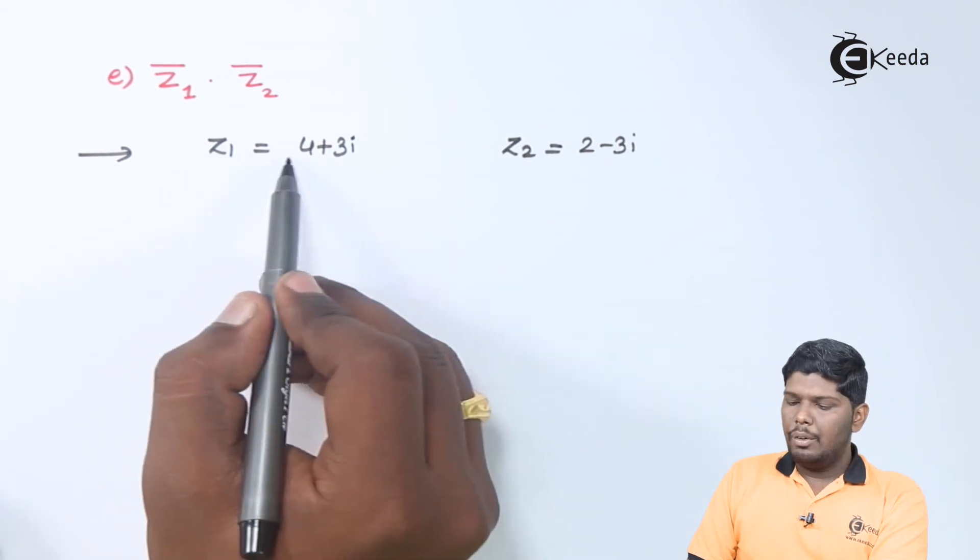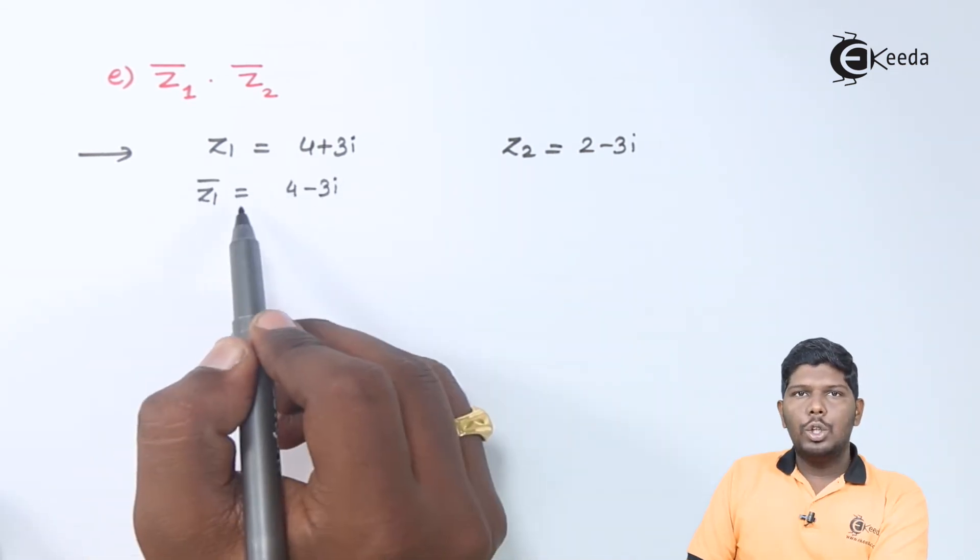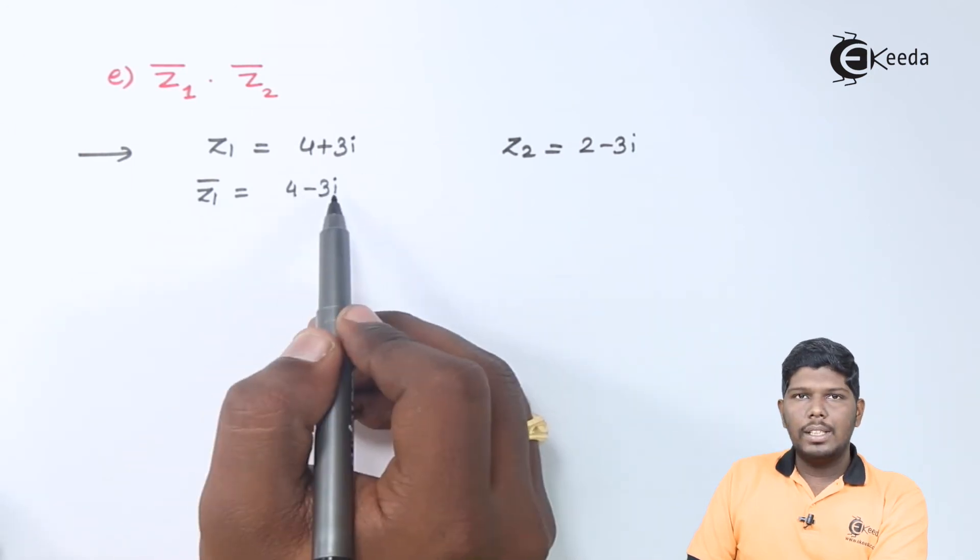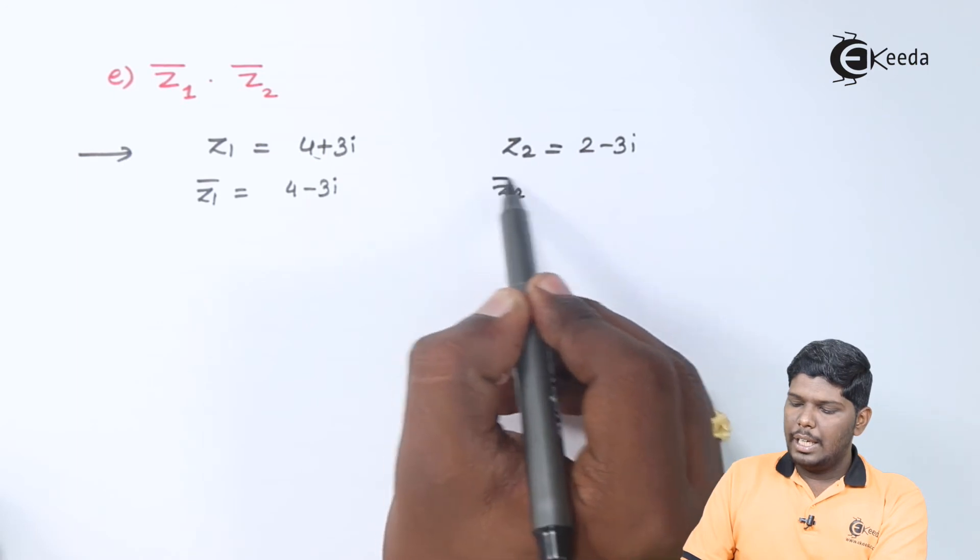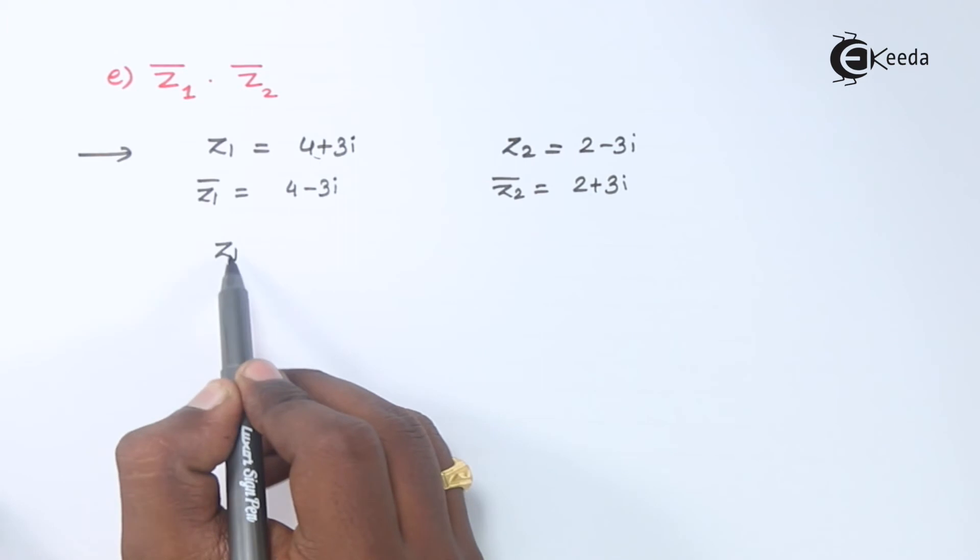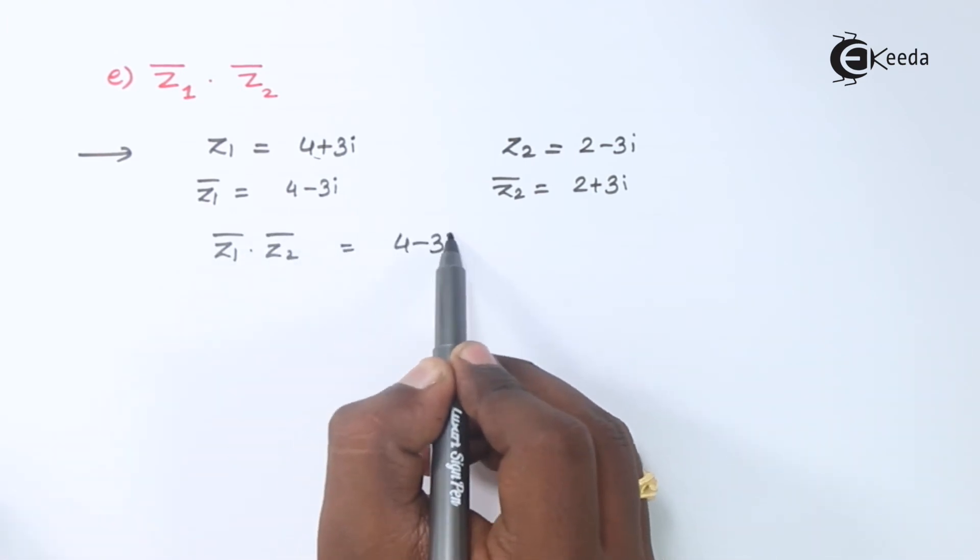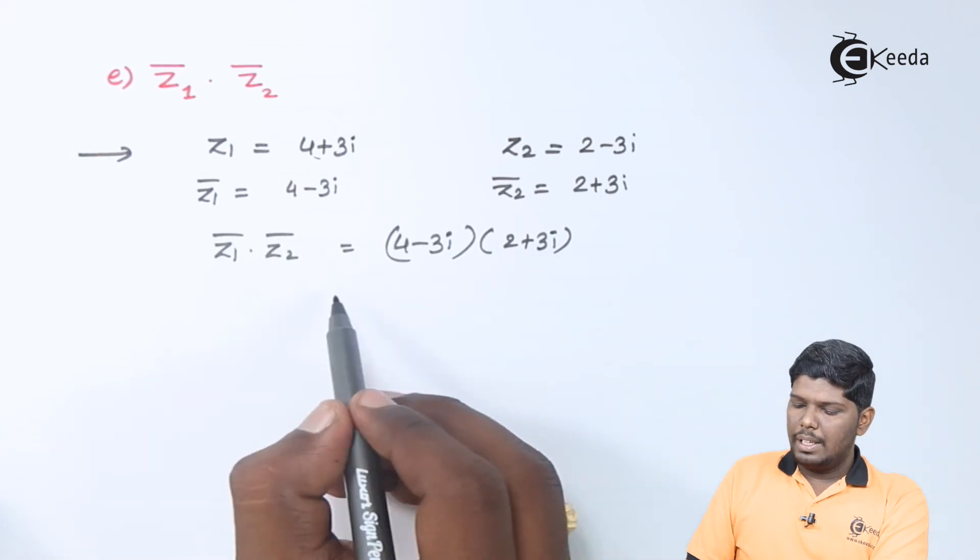If I say z1 is 4 plus 3i, its conjugate z1 bar will be 4 minus 3i. Just change the sign of the imaginary part. And z2 bar will be 2 plus 3i. Let us find out their product. We have 4 minus 3i into 2 plus 3i.